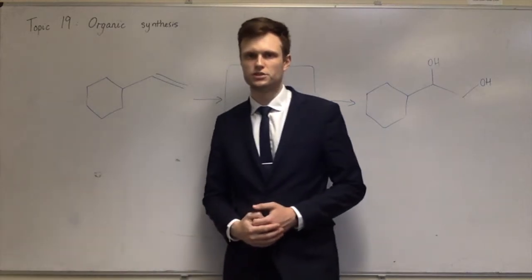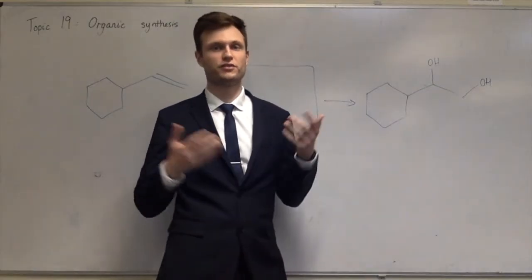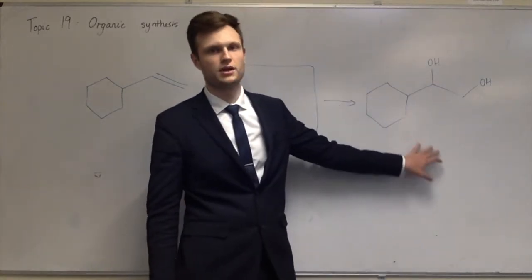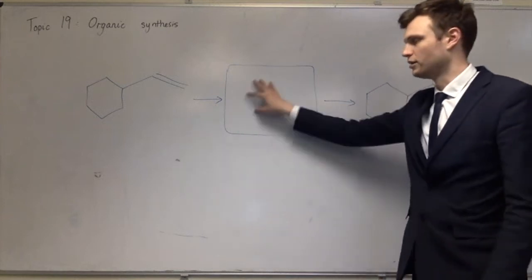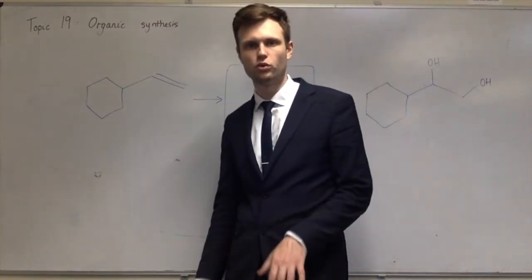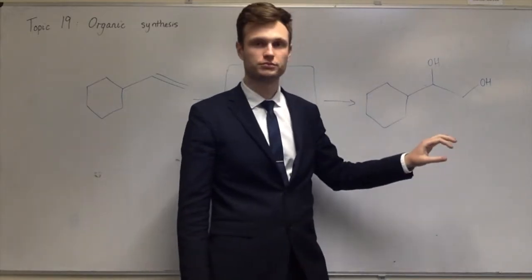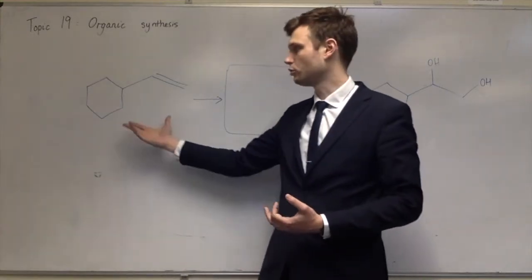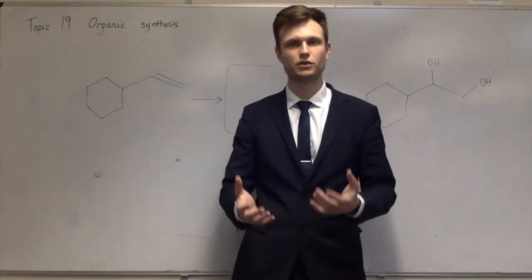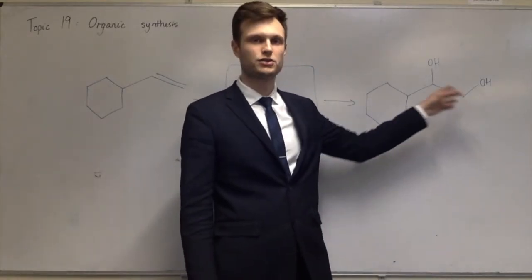For an organic synthetic route, questions typically give you a starting molecule and a target molecule — often ones you've never seen before — and you need to get from one to the other in two steps. To answer these questions you need a good understanding of all the reactions covered so far. For example, if you need to get from an alkene to a diol, think about what reactions alkenes can do and what reactions make alcohols, then look for where they overlap. Adding water to a double bond gives a single alcohol, but you need two — so that alone won't work.